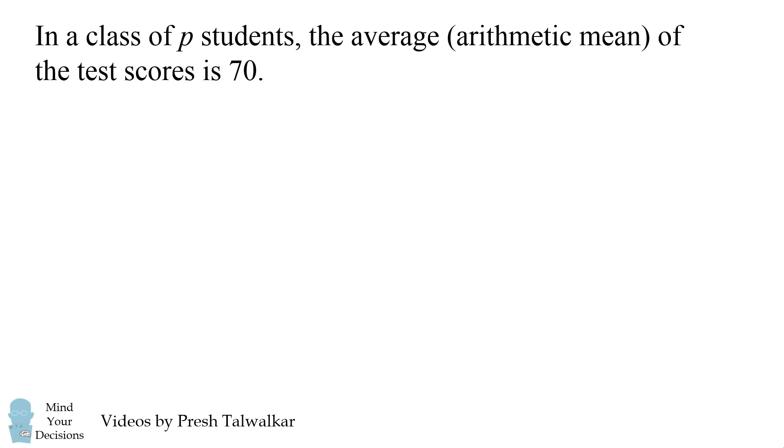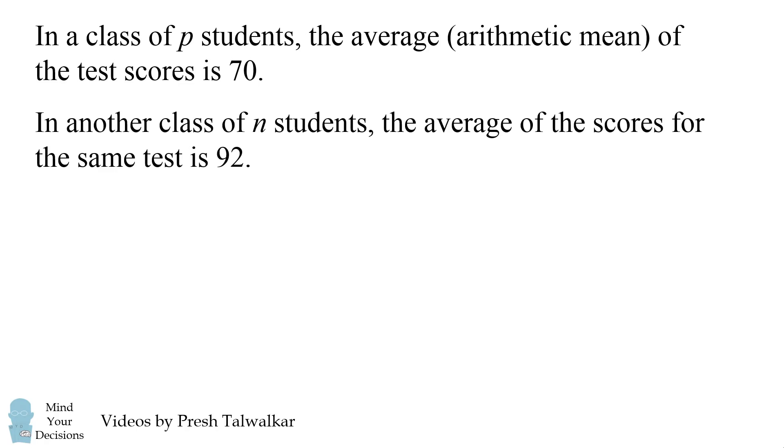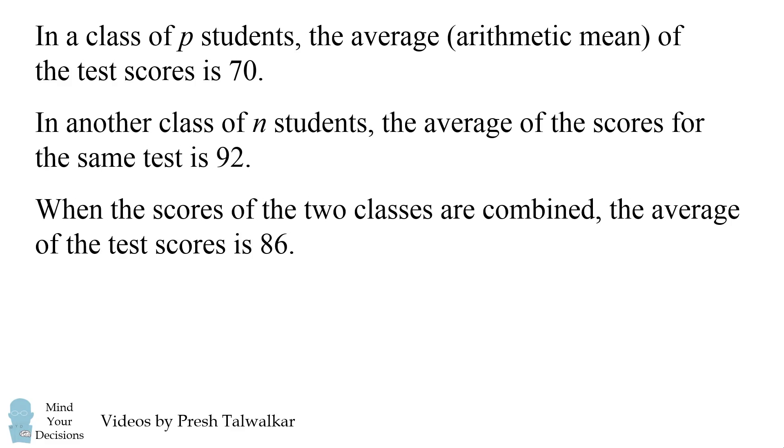Here's a challenging problem from an SAT test. In a class of P students, the average (arithmetic mean) of the test scores is 70. In another class of N students, the average of the scores for the same test is 92. When the scores of the two classes are combined, the average of the test scores is 86. What is the value of P divided by N?